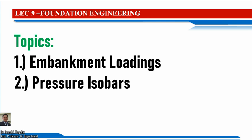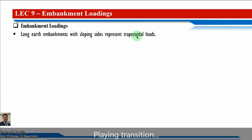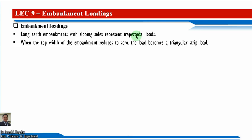Hello, good day everyone. Today we are going to discuss two topics: number one is embankment loadings, and number two is pressure isobars. Long earth embankments with sloping sides represent trapezoidal loads, and when the top width of the embankment reduces to zero, the load becomes a triangular strip load.